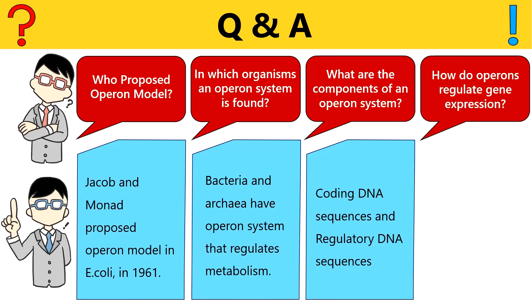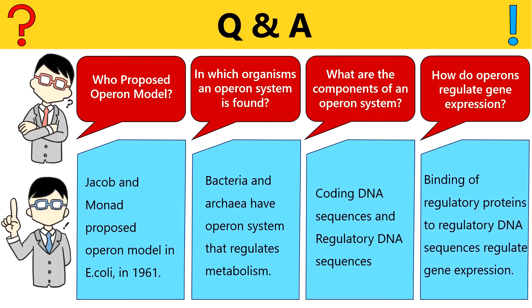The last question is how do operons regulate gene expression? The answer to this question is very simple. Each operon has regulatory DNA sequences that function as binding sites for the regulatory protein, and this binding either promotes or inhibits transcription.